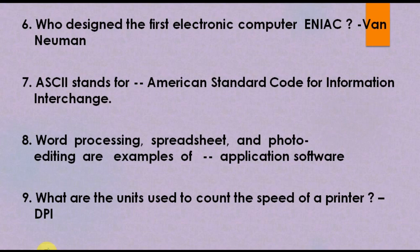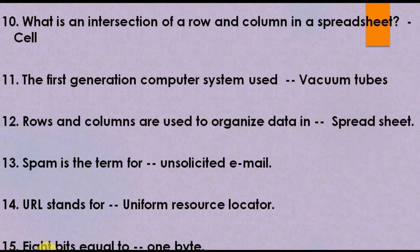Question number 9: What unit is used to measure the speed of a dot matrix printer? The answer is DPI — dots per inch.